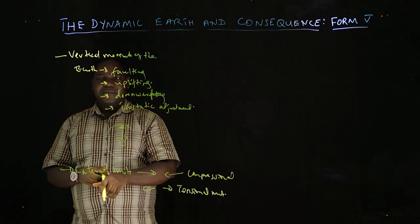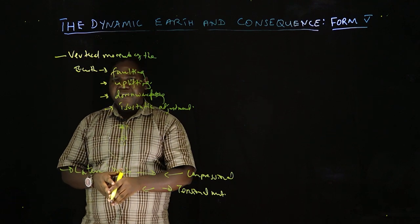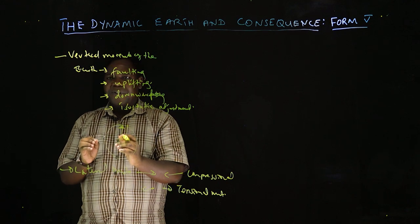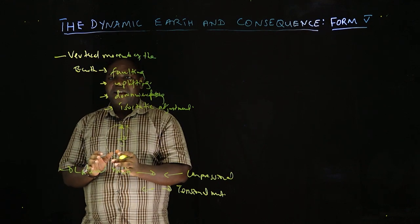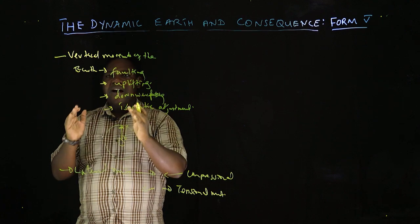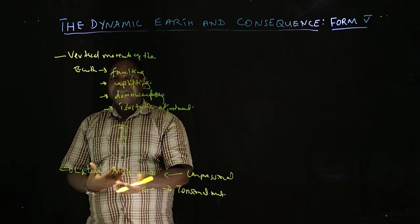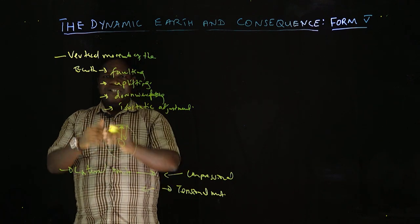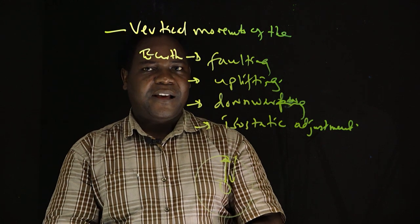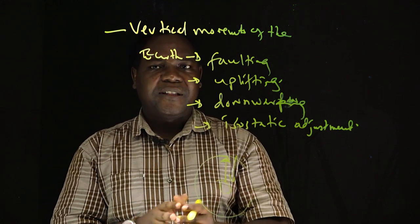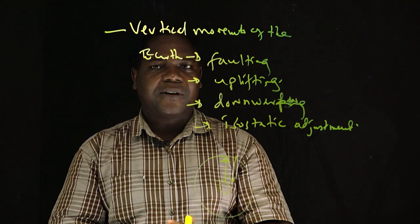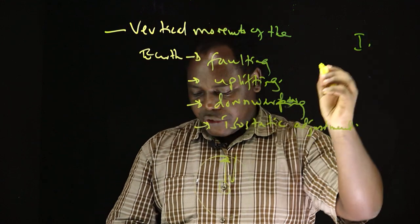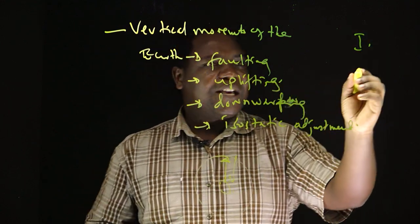In short, this topic — the Dynamic Earth and Consequence — we rigorously discuss how the earth moves internally and externally, and the way on the surface we can know that this is because of some disturbances within the earth's surface. The topic has so many parts, and today we will focus on the first part: what we call isostasy theory.